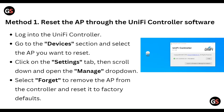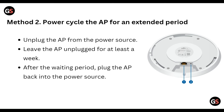To do this, log into the UniFi Controller and go to the Devices section. Select the AP you want to reset and click the Settings tab, then scroll down and open the Manage dropdown. Select the option to remove the AP from the controller and reset it to factory defaults.